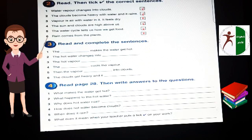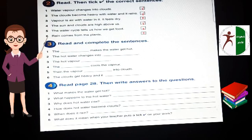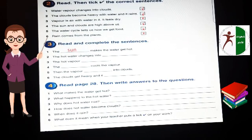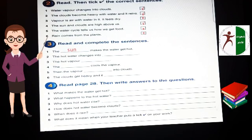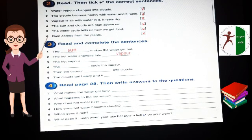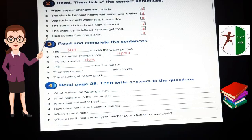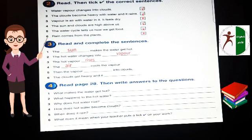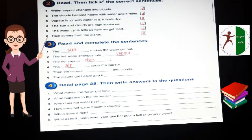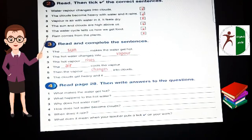Read and complete the sentences. The sun makes the water get hot. The hot water changes into vapor. The hot vapor rises. The air cools the vapor. When vapor rises up, the air cools it. Then the vapor becomes or changes into clouds. The clouds get heavy and it rains. This is also the summarize of water cycle in this activity.